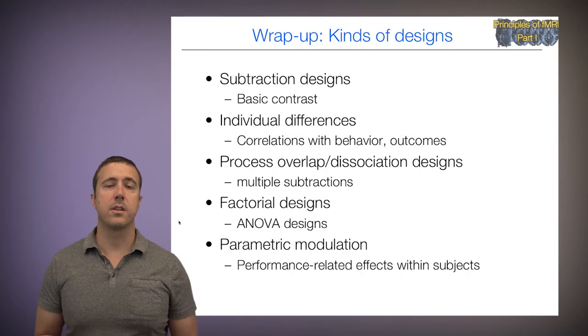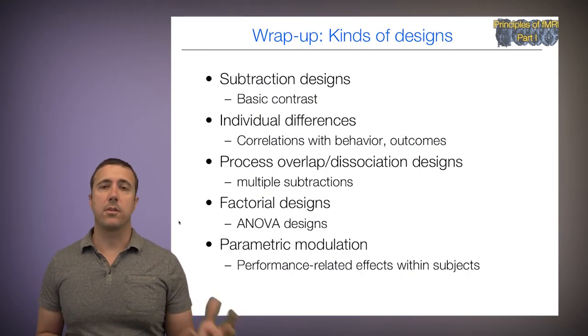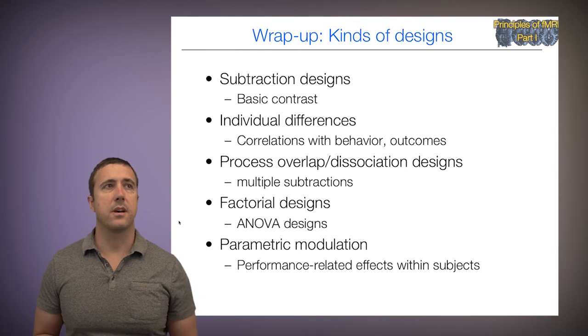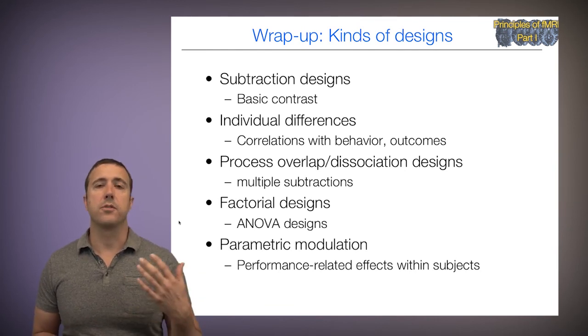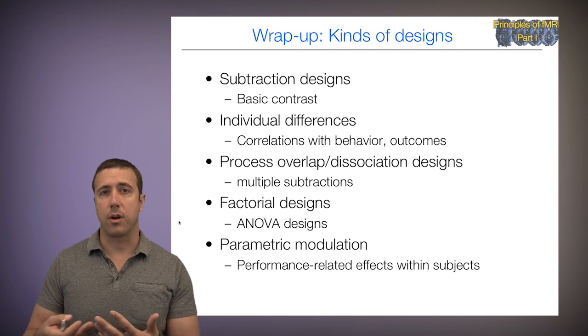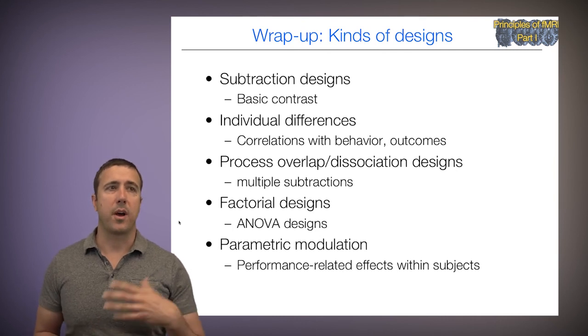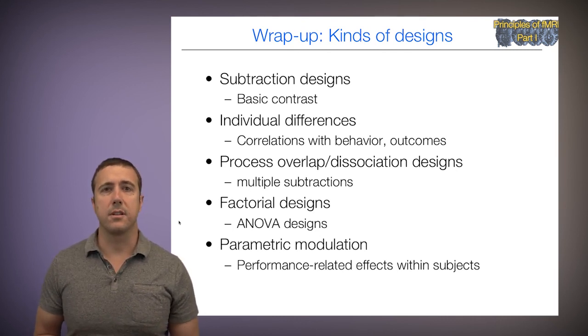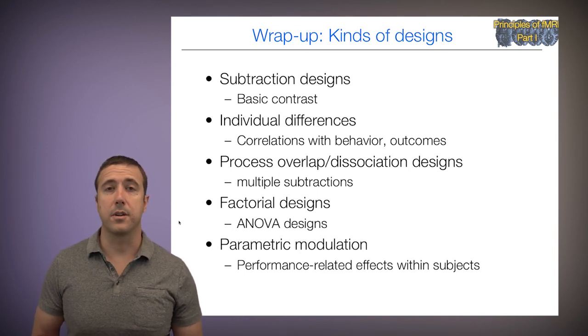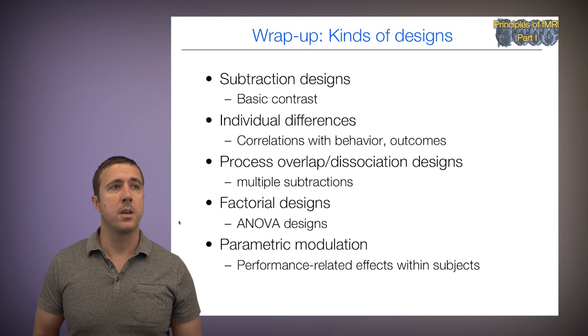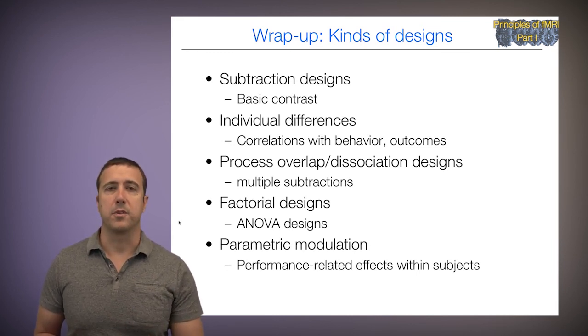We'll look at examples of how to do all of these designs statistically when we talk about the general linear model. To wrap up: we've talked about subtraction designs and basic contrasts, individual differences designs and correlations between brain and behavior across individuals, process overlap and dissociation designs involving multiple comparisons and the logic of double dissociation or separate modifiability, factorial designs, and parametric modulation.